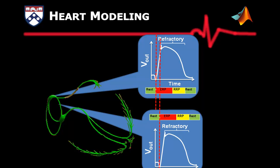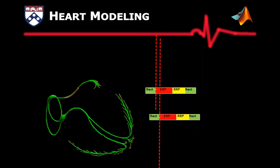After a heart muscle is activated, it requires some time to recover from the last activation. This time period is called the refractory period, which can be divided into ERP and RRP, which have different behaviors.